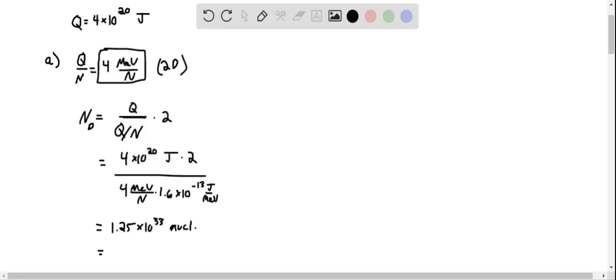But because we are told initially we have 4 times 10 to the 20 joules, that's just one significant figure. So I should report my answer for one significant figure as well, 1 times 10 to the 33 nuclei. That's our answer for part A.